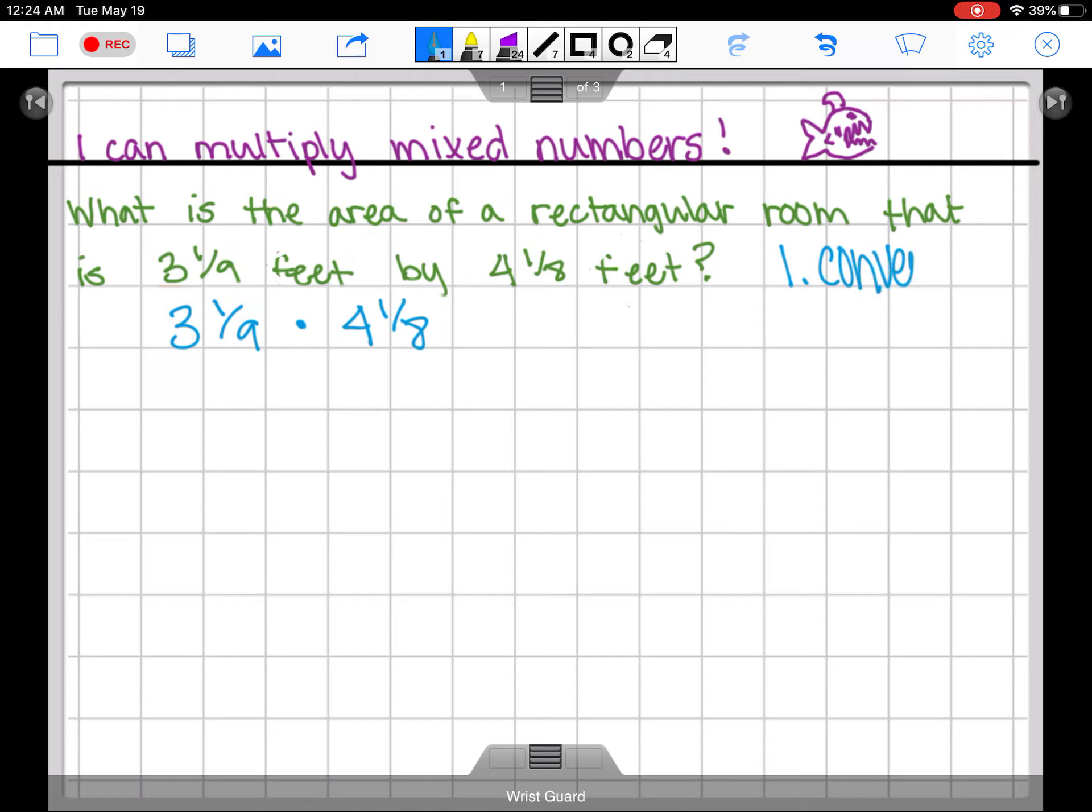The big thing first, we need to convert. It is a huge pain in the tush to multiply mixed numbers if you don't convert them to improper fractions. It's possible but it is a pain and it takes a long time. So we're gonna do it a little bit quicker and we are gonna turn these into improper fractions. Turning this into an improper fraction is going to be 28 over 9 and this one here in an improper fraction is going to be 33 over 8.